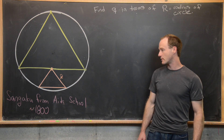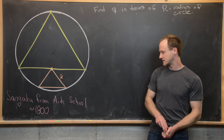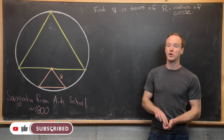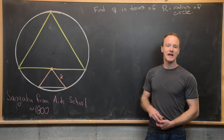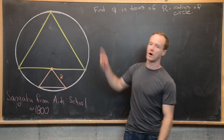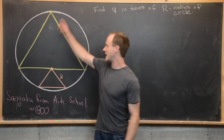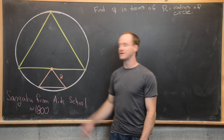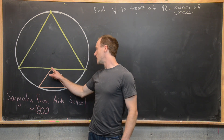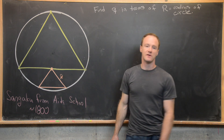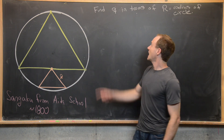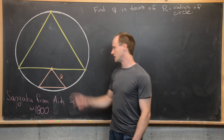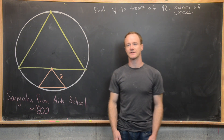Here we're going to look at a nice Japanese geometry problem. This comes from a Sangaku from the Aida school in about 1800. These were geometry problems that were painted onto wooden blocks. The setup: we have a circle of radius R, inside of which an equilateral triangle is inscribed. At the midpoint of one of its sides, we place another equilateral triangle with two vertices on the circle and one at that midpoint. Our goal is to find Q, the side length of the smaller equilateral triangle, in terms of R.